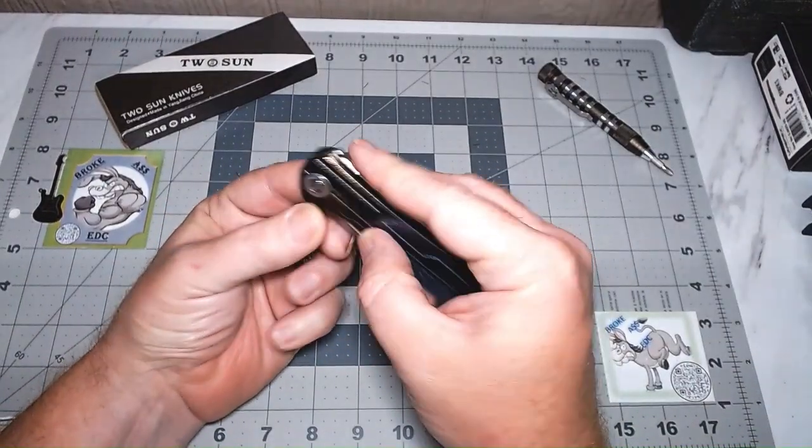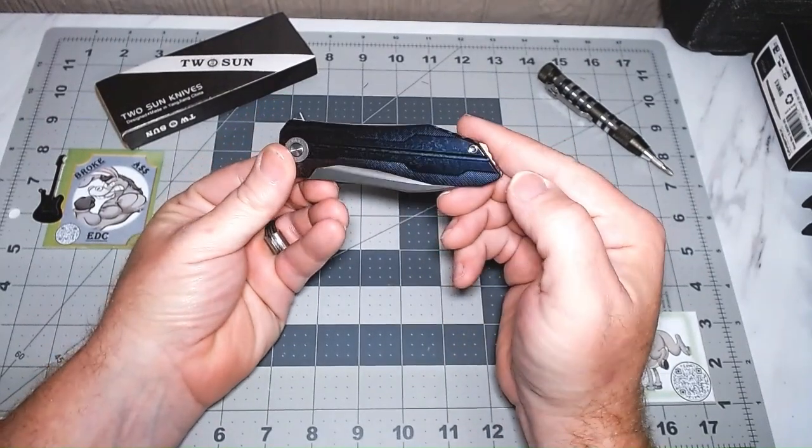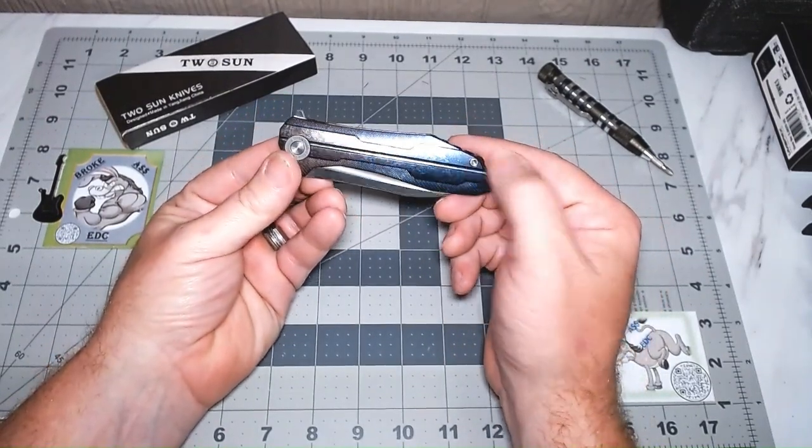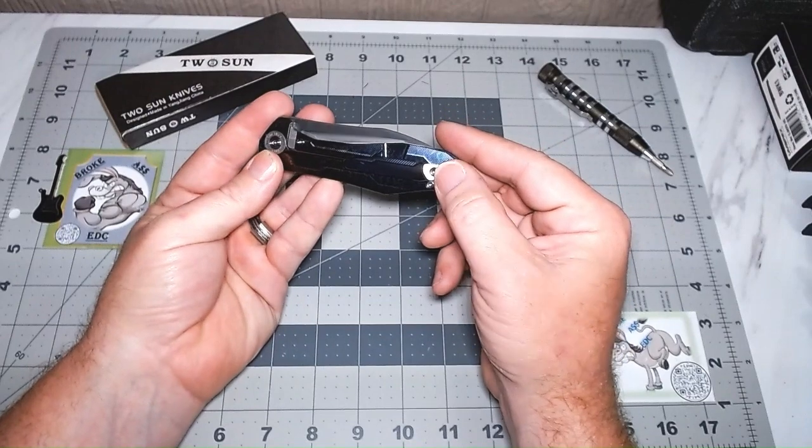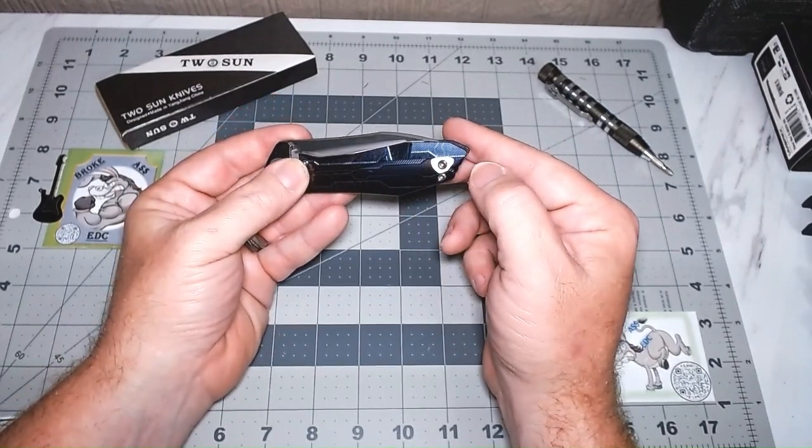Good big pivot. So, I mean, it can take a little bit of a hit. They didn't go overboard with the hardware. Pretty simple. One back here. You've got your two, your lock bar screw, your pocket clip.